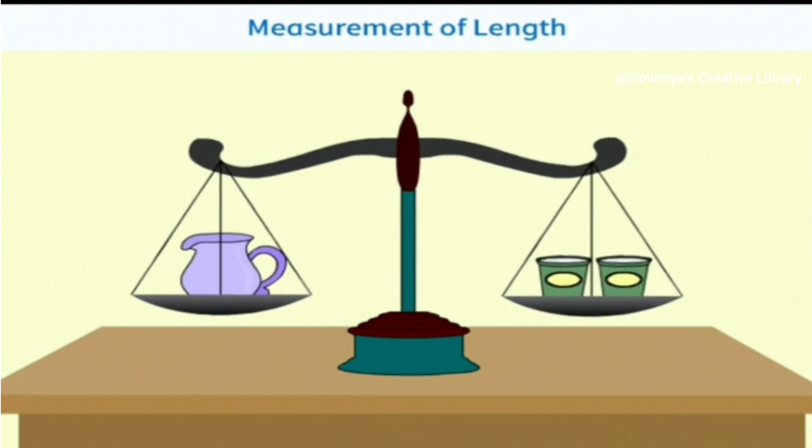If the plates or bowls are on an even line, then both objects are of the same weight.